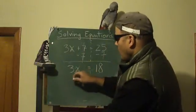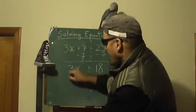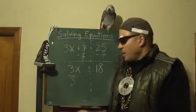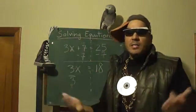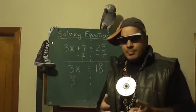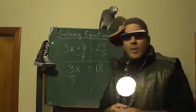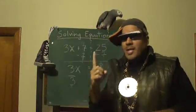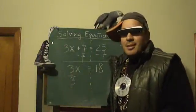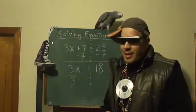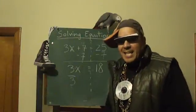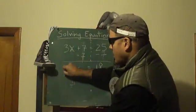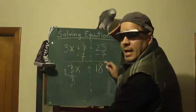Just as we undid addition with subtraction, we're going to undo that multiplication with its inverse operation, which is division. We divide 3 by itself — draw a line under the 3 and write another 3. If you're familiar with fractions, that's 3 thirds. If you have a candy bar cut into 3 parts and you have all 3 parts, you have the whole candy bar — that's 1. So any number over itself equals 1. We cross that out and replace it with a 1. Now we're left with 1x equals 18.